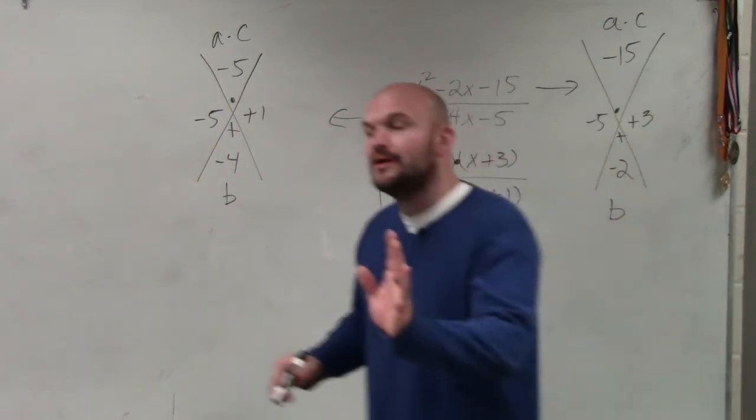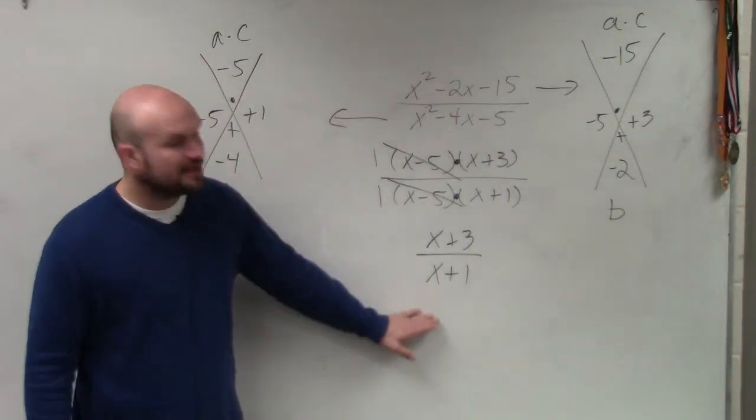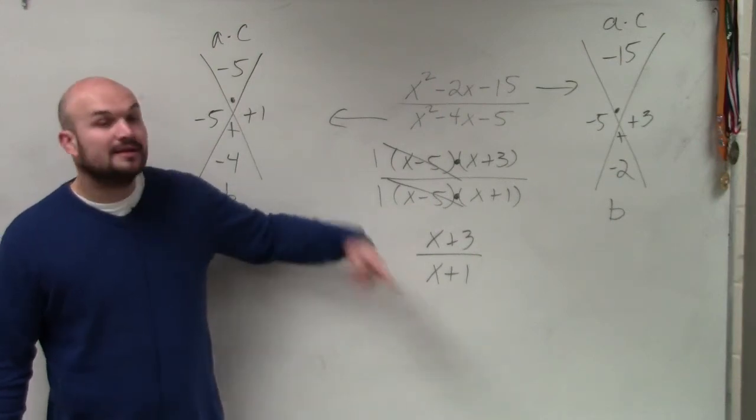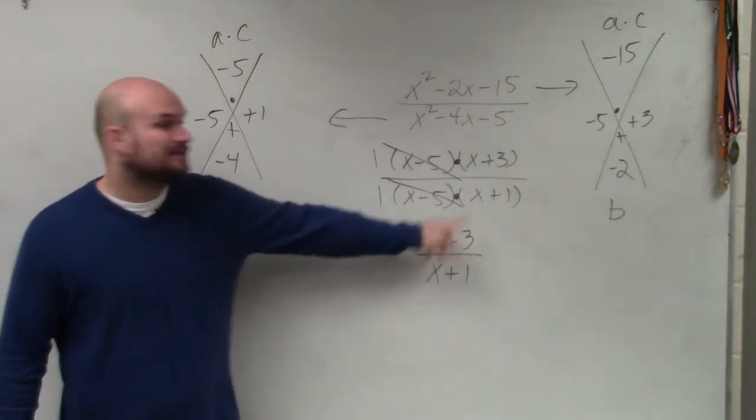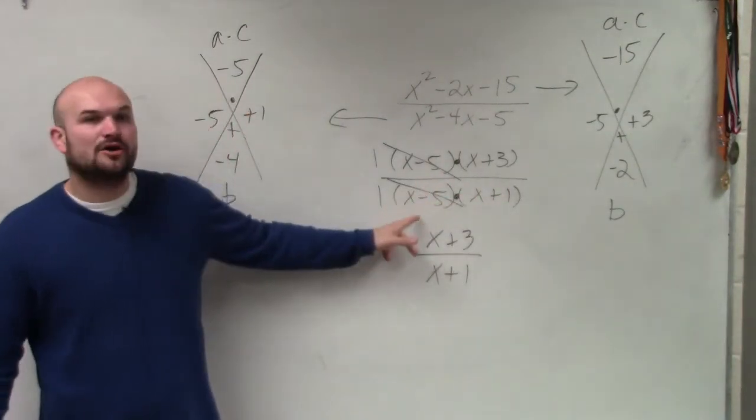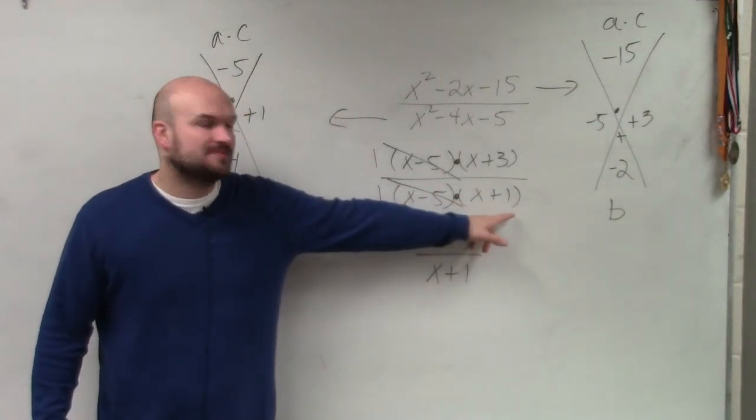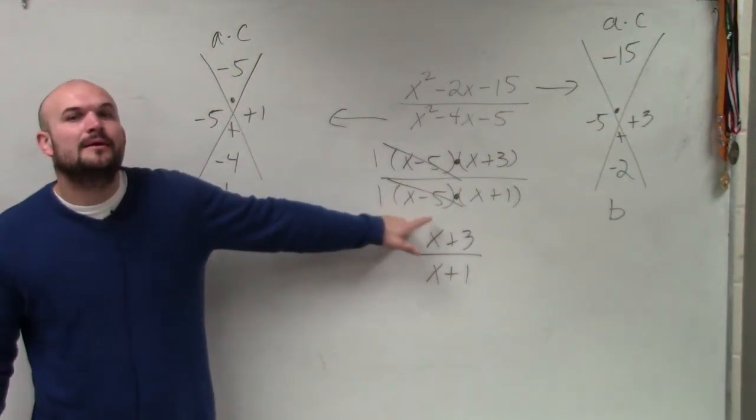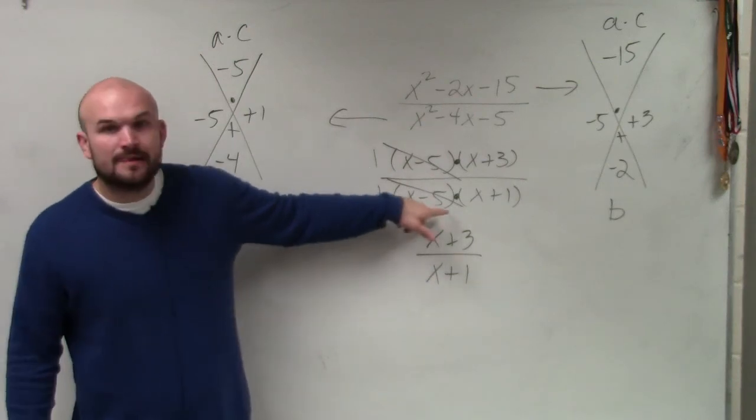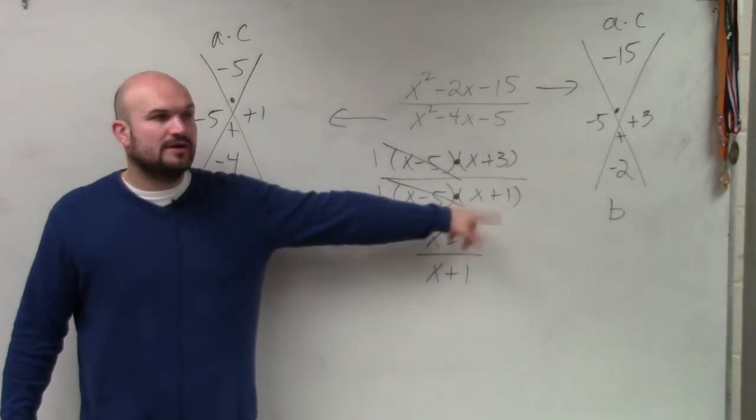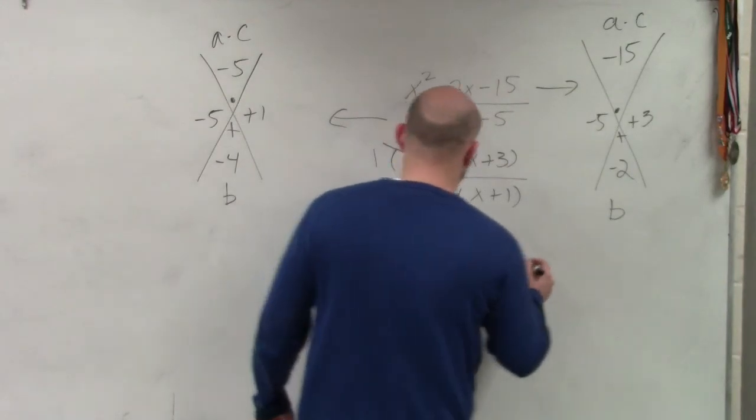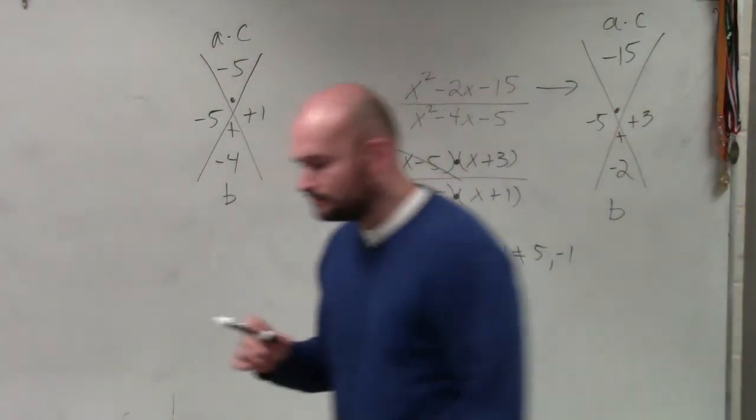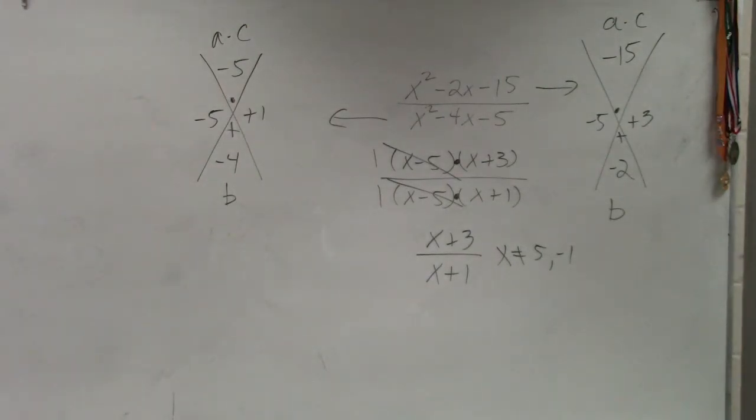And then remember, also, when we're looking at our constraints. Here, our constraint is x cannot equal negative 1, as well as x cannot equal positive 5. Because if x equals 5, that would be 0. And if x equals negative 1, that would be 0. So x cannot equal 5 and negative 1. So just make sure you guys are aware of your constraints.